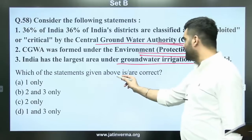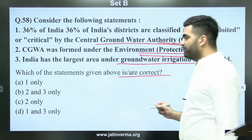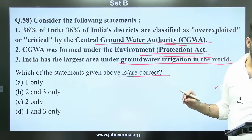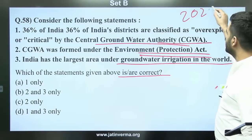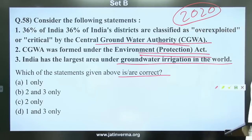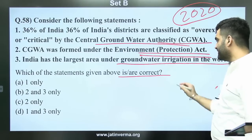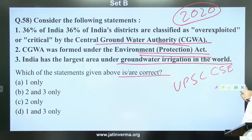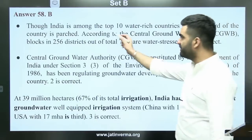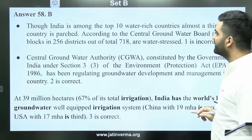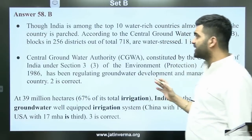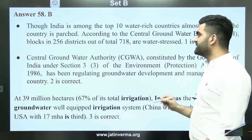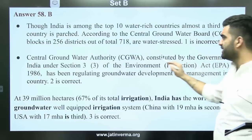The answer to question 58 is B — statements 2 and 3 only. India is among the top 10 water-rich countries, but almost one-third of the country is parched. Out of 718 districts, 256 are water-stressed. The first statement about 36% of districts being over-exploited is incorrect. CGWA is constituted under the Environment Protection Act — this is correct.